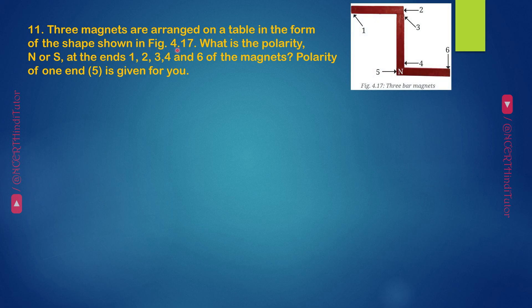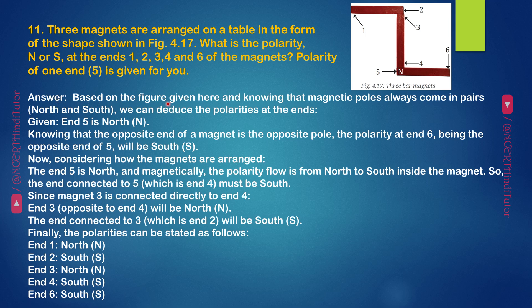Question 11: Three magnets are arranged on a table in the form of the shape shown in figure 4.17. What is the polarity, north or south, at the ends 1, 2, 3, 4, and 6 of the magnets? Polarity of one end, 5, is given for you. Answer: Based on the figure given here and knowing that magnetic poles always come in pairs, north and south, we can deduce the polarities at the ends. Given N5 is north and knowing that the opposite end of a magnet is the opposite pole, the polarity at N6 being the opposite end of 5 will be south.